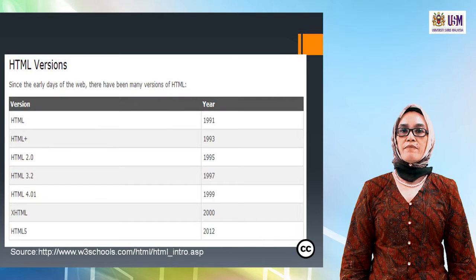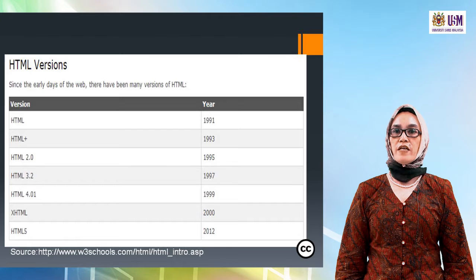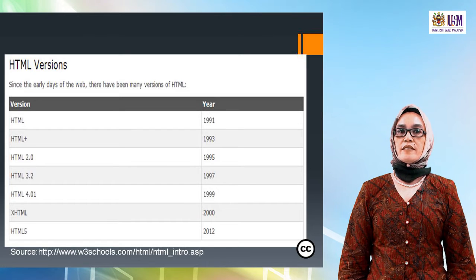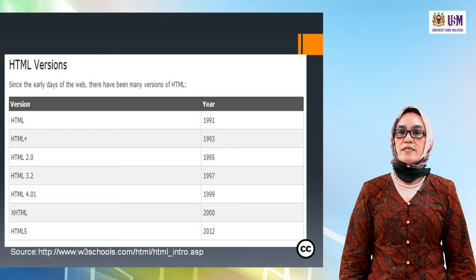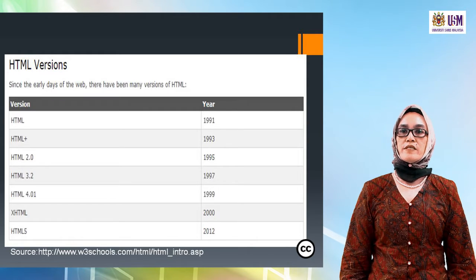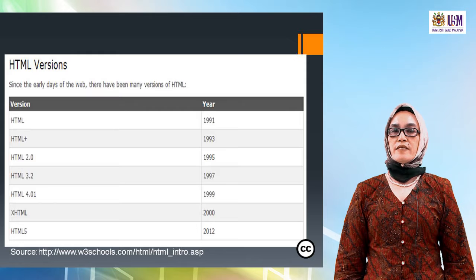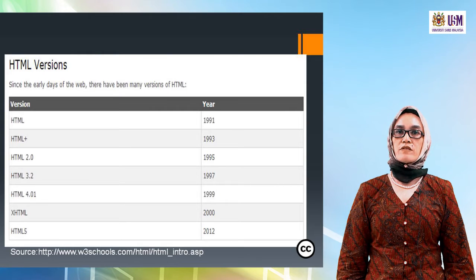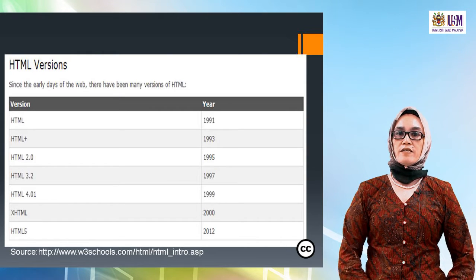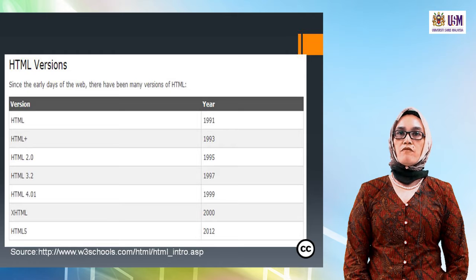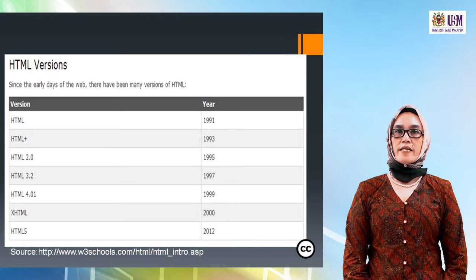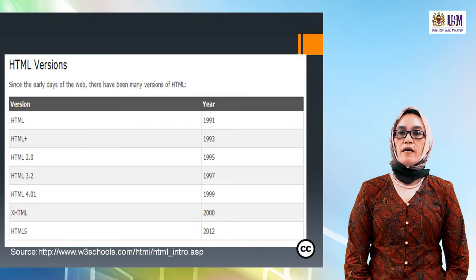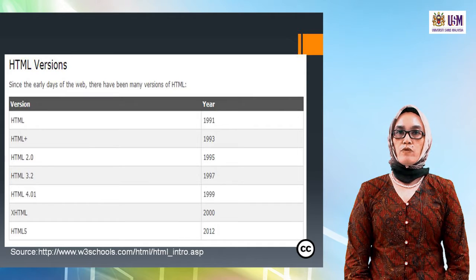Since the early days of the web, there have been many versions of HTML. In 1991 it was called HTML, in 1993 HTML+, in 1995 HTML 2.0, in 1997 HTML 3.2, in 1999 HTML 4.01, in 2000 XHTML, and now HTML5 in 2012.